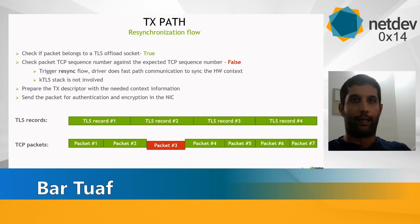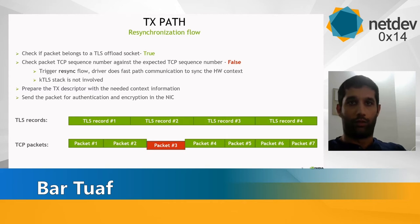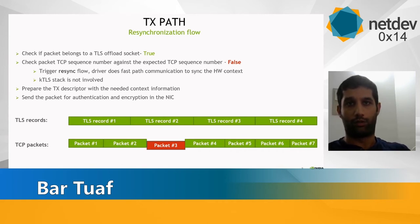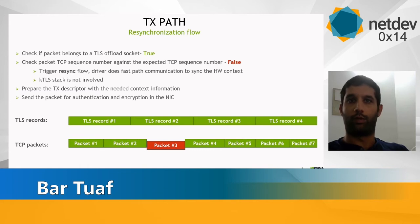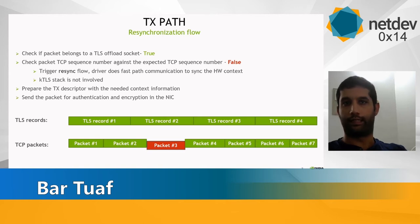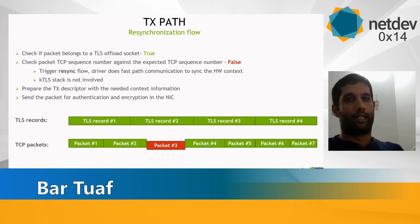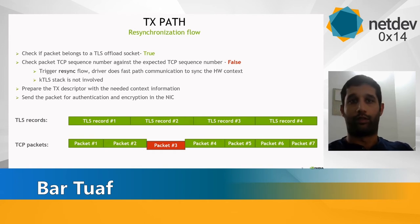Now suppose the packet is an offloaded packet but the driver discovers the TCP sequence number is not the expected one. The driver will trigger a resync flow — first understanding which TLS record this packet belongs to, then updating hardware with the suitable crypto context using fast-path communication with fencing, to guarantee that we supply hardware with the correct TX properties. Note that the kTLS module is not involved in this procedure. The packet can then be passed for encryption.